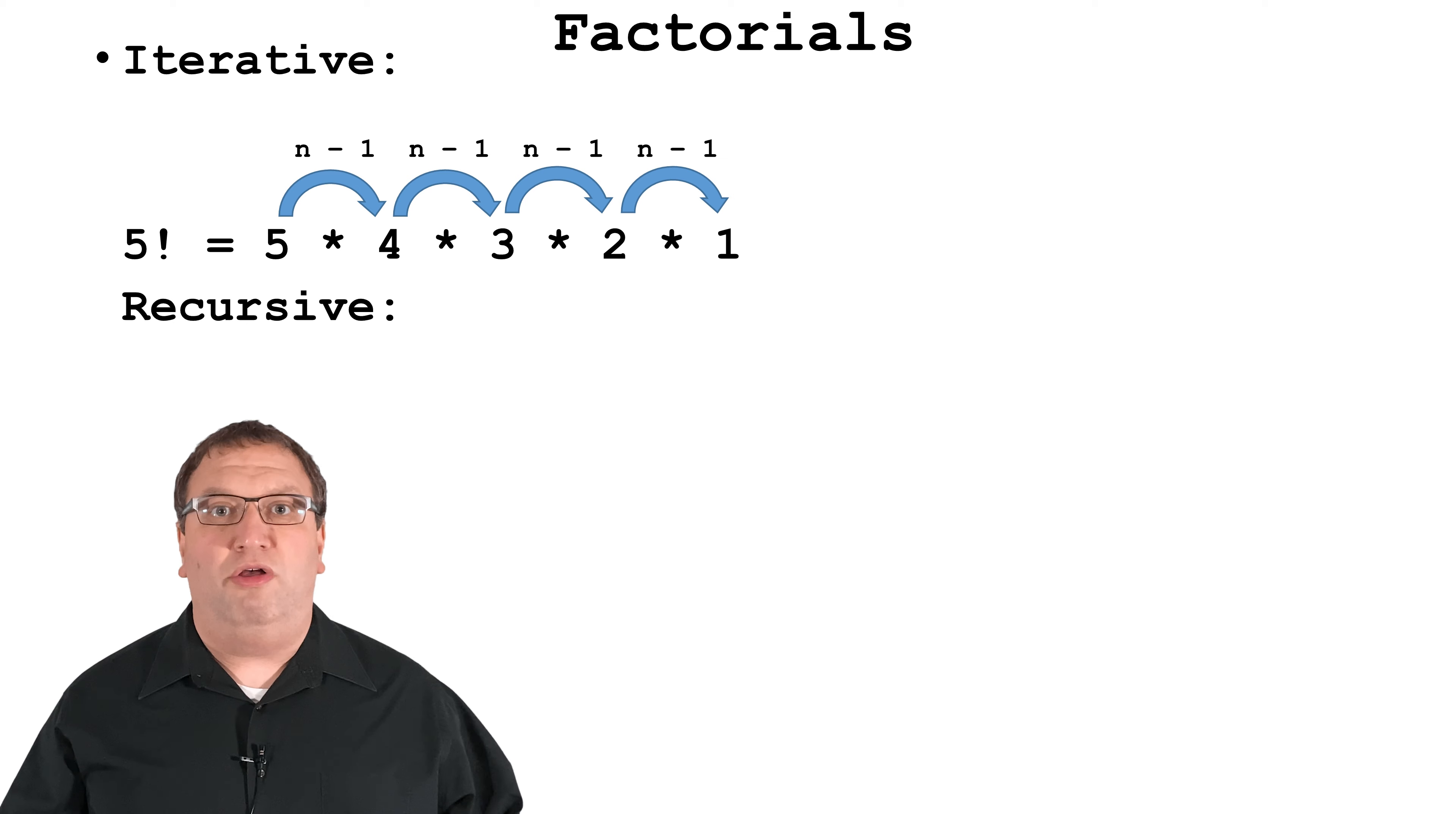We're going to use a recursive technique to solve a factorial. We saw that the iterative way to calculate 5 factorial is 5 times 4 times 3 times 2 times 1. But we could also say that 5 factorial is equal to 5 times 4 factorial.